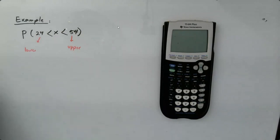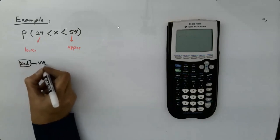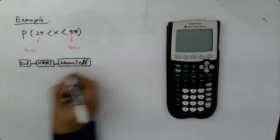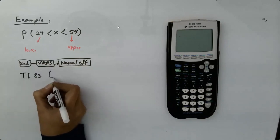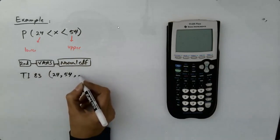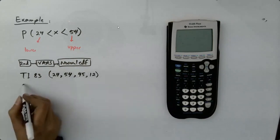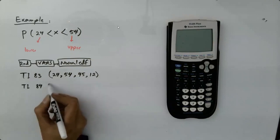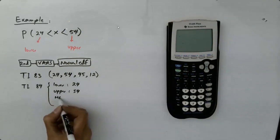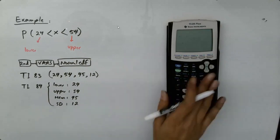I need to use my calculator, normalCDF, second VARS, normalCDF. If you're using TI-83, just use parentheses, your lower limit, your upper limit, and the mean which is given to us as 45 minutes and the standard deviation is 12. Or if you're using TI-84 or your emulator, the lower limit is 24, the upper limit is 54, mean is 45 minutes and the standard deviation is 12 minutes.